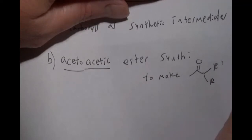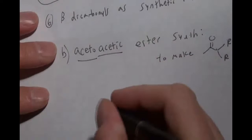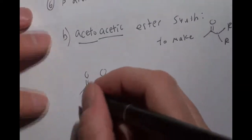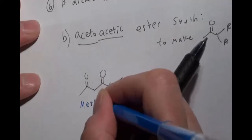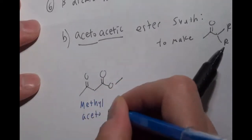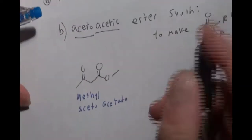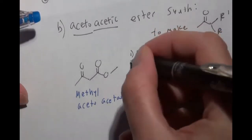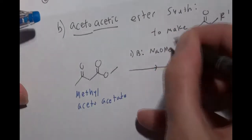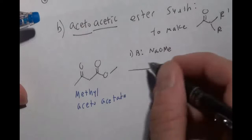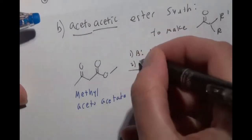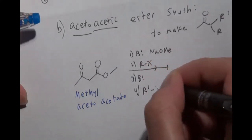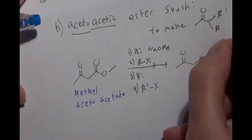You can make your methyl ketone with two R groups, R and R prime. You can start with methyl acetoacetate and do a reaction with a base — usually NaOMe because you have a methyl ester. If you have an ethyl ester, you'd use NaOEt. Then use R-X and base again with R prime X, and you load up the molecule with R groups.